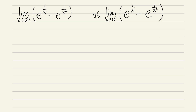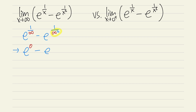For the first one, we actually get to draw a conclusion along the way. Let's just put infinity into all the terms: we get e^(1/∞) minus e^(1/∞²). Now 1/∞ gives us zero, so for the first part we have e^0, and infinity squared is still infinity so 1/∞ also gives zero, meaning we also get e^0. So e^0 is just 1, minus another e^0 which is 1, giving us 1 minus 1.